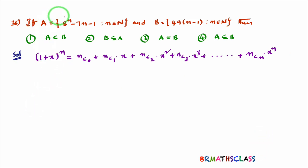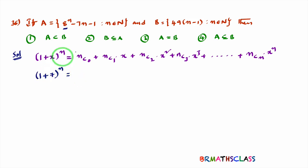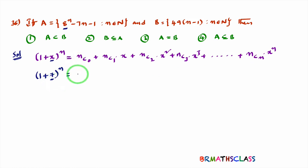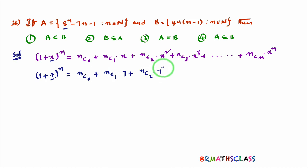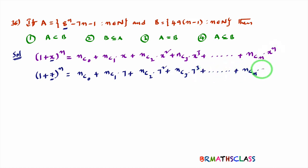How do we use binomial theorem in this problem? Observe that 8 power n can be written as 1 plus 7 whole power n. In this type of problem, wherever x appears in the expansion, you write 7. So you get nc0 plus nc1 into 7 plus nc2 into 7 square plus nc3 into 7 cube plus and so on plus ncn into 7 power n.